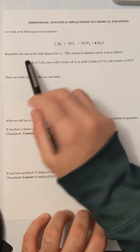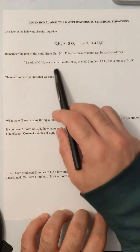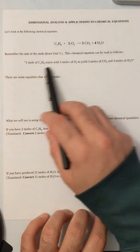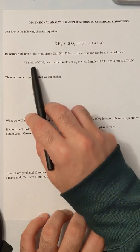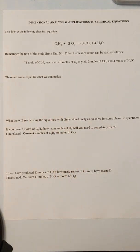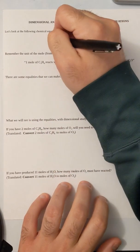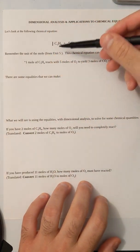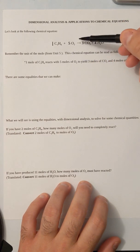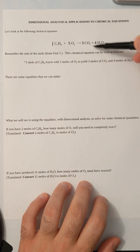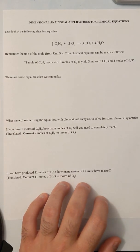Remember the unit of the mole way back in unit 5? This chemical equation can be read as follows: one mole of C3H8 — remember there's a hidden one right here — reacts with five moles of O2 to yield three moles of CO2 and four moles of H2O.